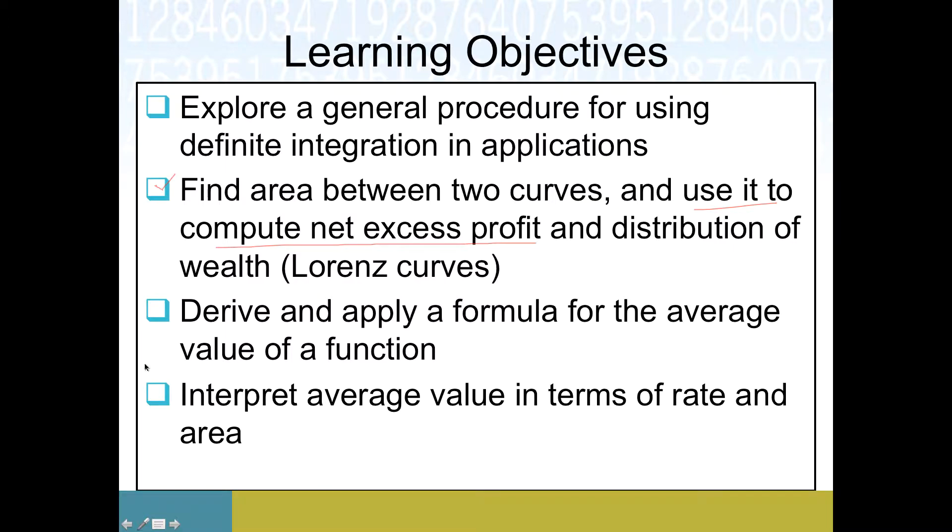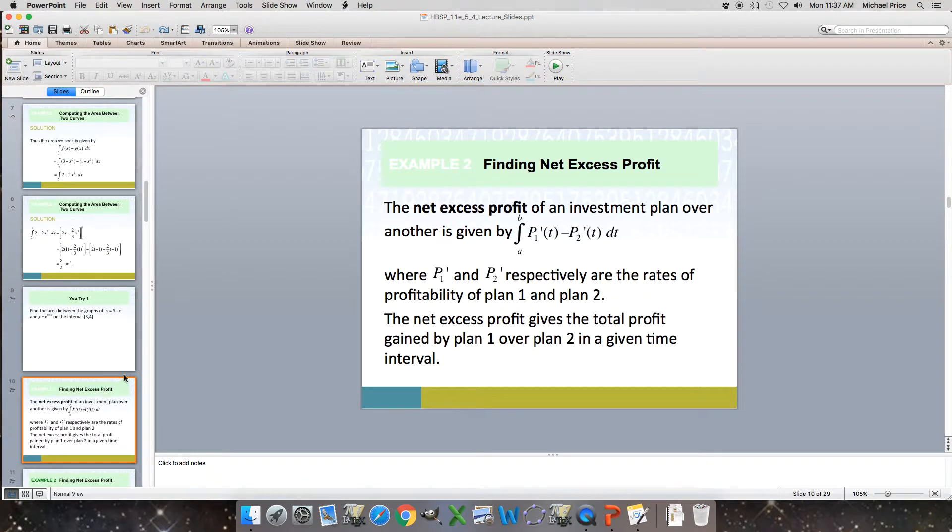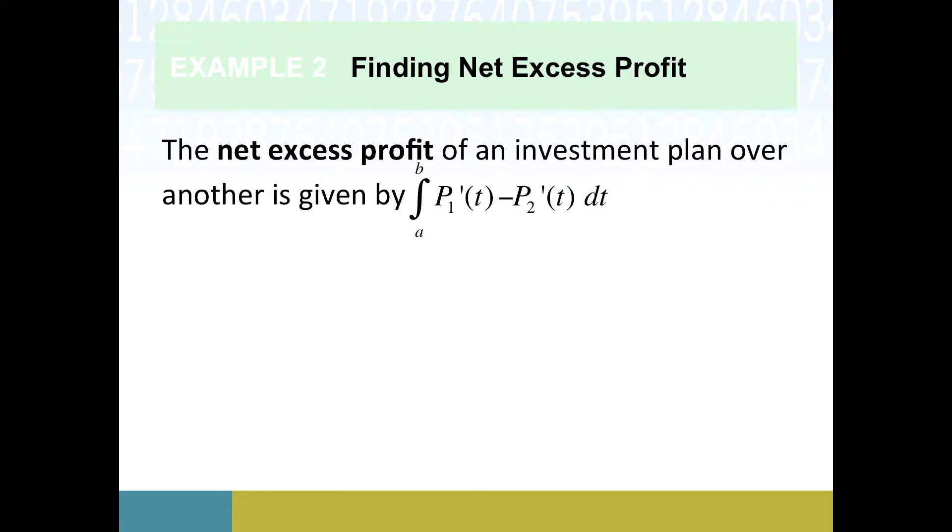So let's see if we can get on track here and find that right slide. Net excess profit is one of the textbook's kind of pet projects for area between two curves. So it's a specific application of this idea that if you want the area between two curves, you look at the difference between the two functions integrated on some interval. In this case, the specific functions we're looking at happen to be rates of profit, and if we compare two different investment rates like this and take their integral, we get the net excess profit.